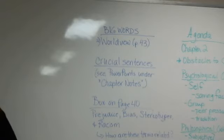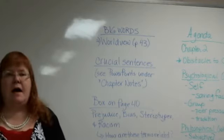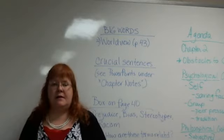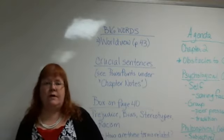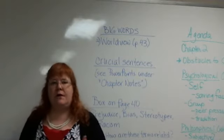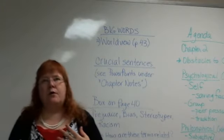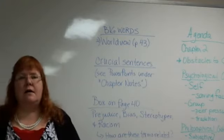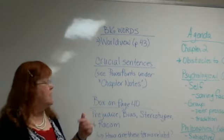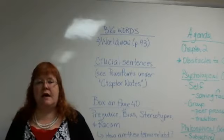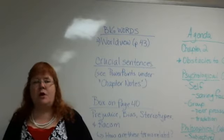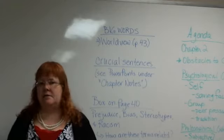So obstacles to critical thinking happen in two ways. They happen because of how we think about things, and they happen because of what we think about things — which sounds like pretty much everything. But they're focused on a couple of main concepts. The first one is psychological. Psychological obstacles to critical thinking are obstacles put in our way because of how we think about things.